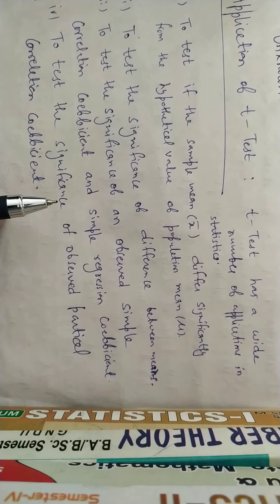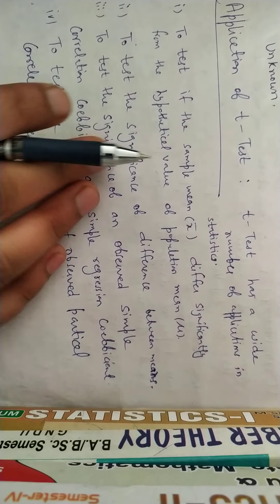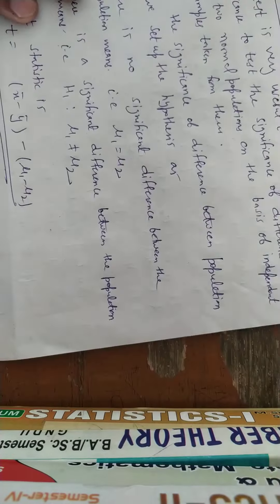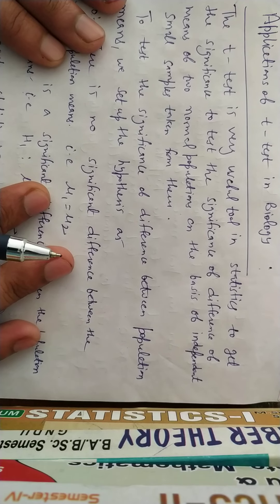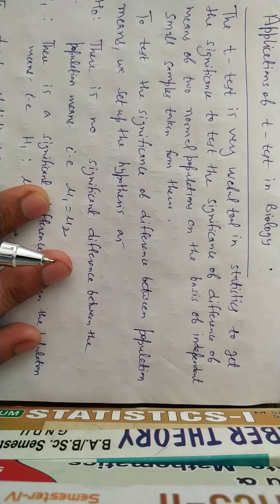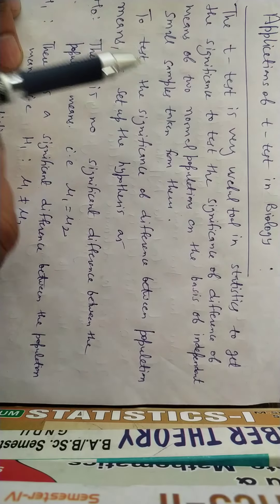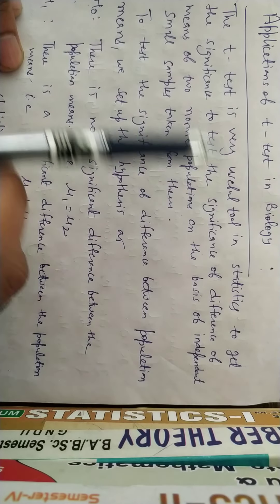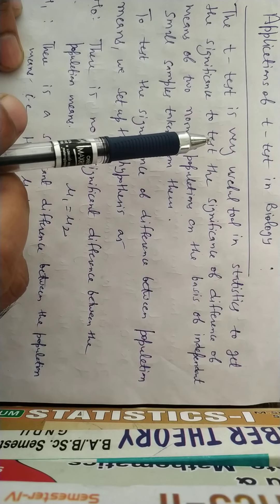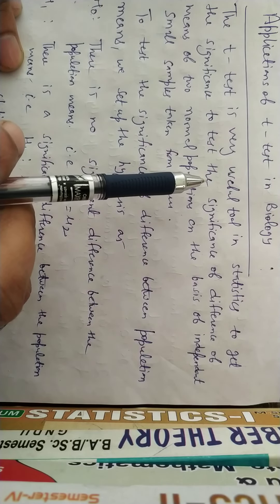The partial correlation coefficient can also be hypothesis-tested using T-Test. These are the applications of T-Test in statistics. The main motive of today's video is to show how T-Test can be applied in biology. I will discuss an example related to biology. T-Test is a very useful tool in statistics to test the significance of difference of means of two normal populations.